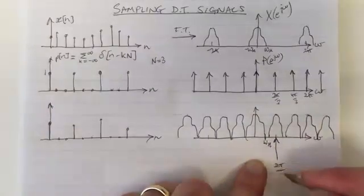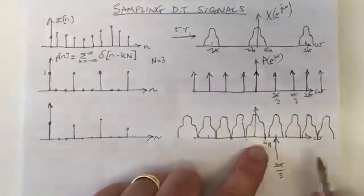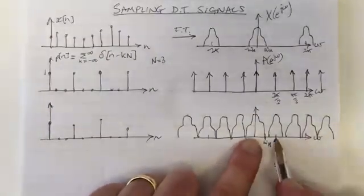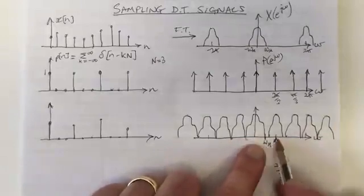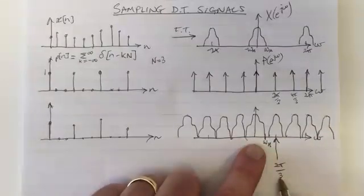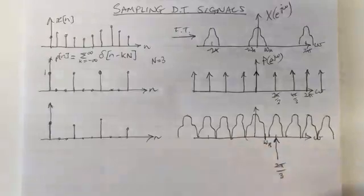so it's less than, in this case, 2π/3, as long as 2 times Wm is less than 2π/3, then we will be able to recover it.